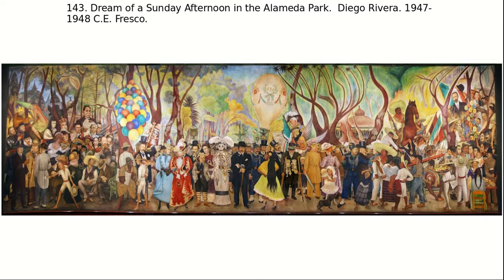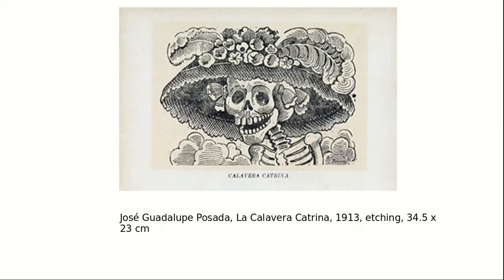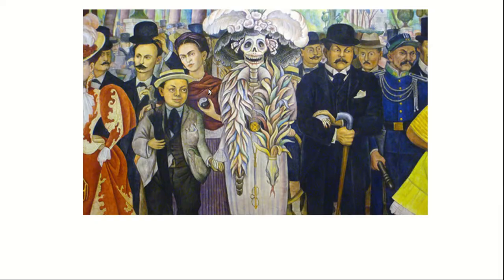Think of this as a festive pictorial autobiography of Diego himself — he is actually in the middle of the painting, painted as a child. Look who is right behind him with her hand on his shoulder: it's Frida Kahlo. So he's in the middle as a child holding hands with Calavera Catrina.